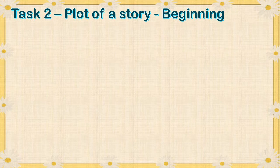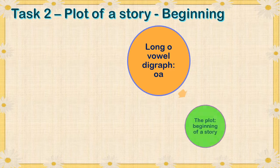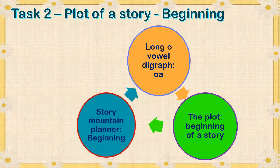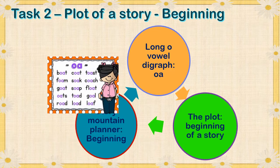Let's have a look at what we will be doing today. You will be doing one sheet of the long vowel digraph, the OA. Then we will look at the plot at the beginning of a story and how you do that. And then you'll start with your story mountain planner — you'll see it looks like a mountain — and you're going to plan the beginning of your story.